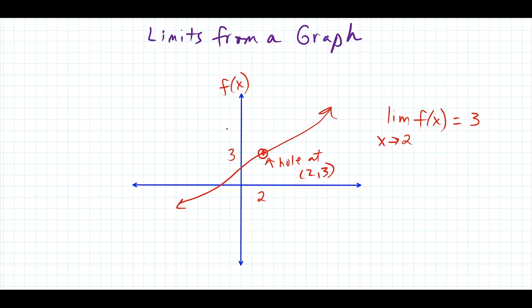They could even try to throw you off by throwing in a function value. Let's say f of x at x equals 2 is defined to be 5. Even though the function value at 2 is equal to 5, the limit is where we're heading towards when we approach from the left side and the right side. When we head in from the left, we're heading towards a y value of 3. And when we head in from the right, we're also heading to a y value of 3. So the limit is heading towards where the hole in the graph is.